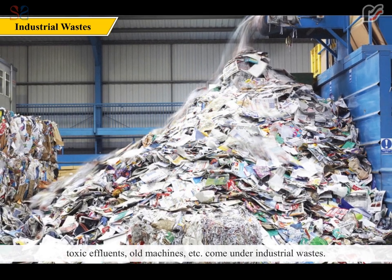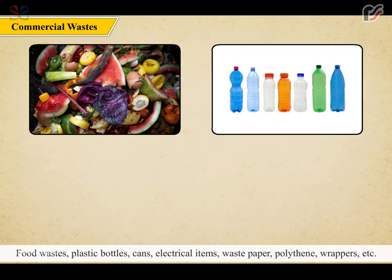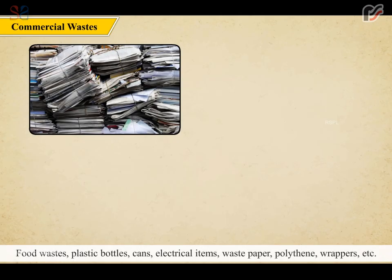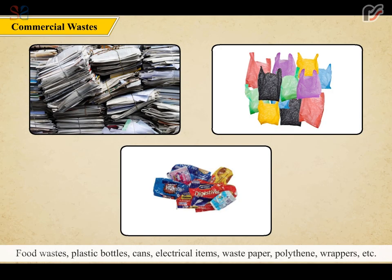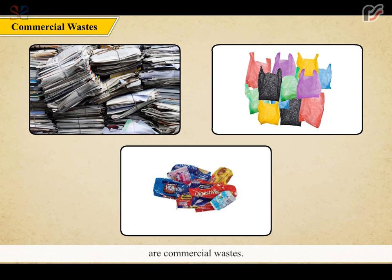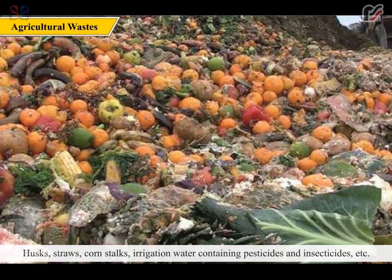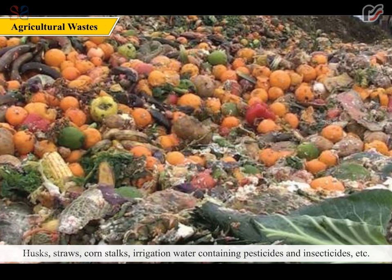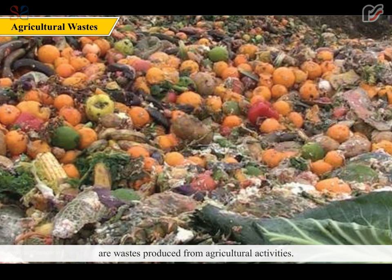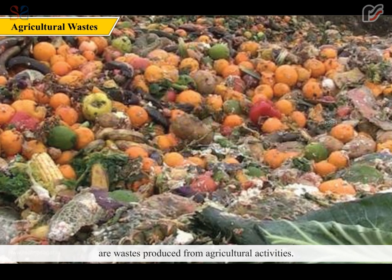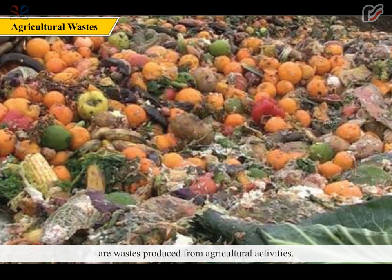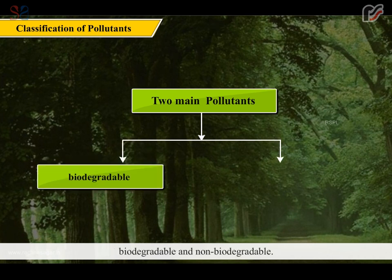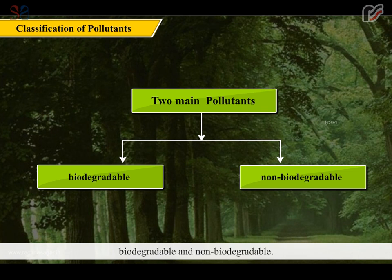Food wastes, plastic bottles, cans, electrical items, waste paper, polythene, wrappers, etc. are commercial wastes. Husks, straws, corn stalks, irrigation water containing pesticides and insecticides, etc. are wastes produced from agricultural activities. Pollutants are generally classified into two main groups: biodegradable and non-biodegradable.